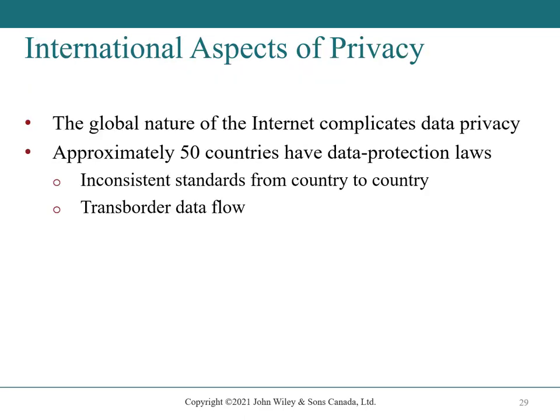International aspects of privacy: the global nature of the internet complicates data privacy. Approximately 50 countries have data protection laws, but there are inconsistent standards from country to country, creating problems with trans-border data flow. Europe has a much higher standard of data privacy, almost elevated to a human right level. The United States has a much lower standard, viewing a lot of data as owned by employers with little personal control. Canada is somewhere in between but has been considered on the lower end of having privacy controls in place.